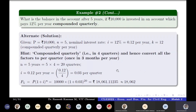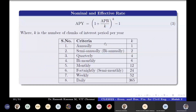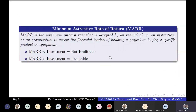As a task, calculate the results for annual, semi-annual, bi-monthly, fortnightly, weekly, and daily compounding — the k values differ and can be taken from the table. The material has been uploaded to MS Teams. MARR — minimum attractive rate of return — is the minimum interest rate acceptable to an individual or institution.